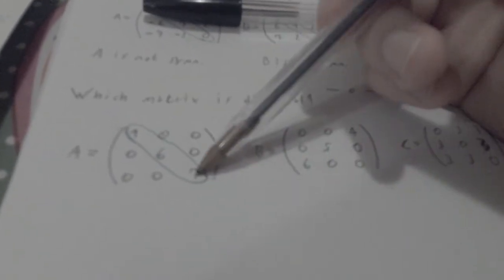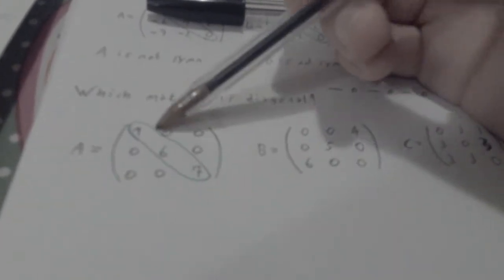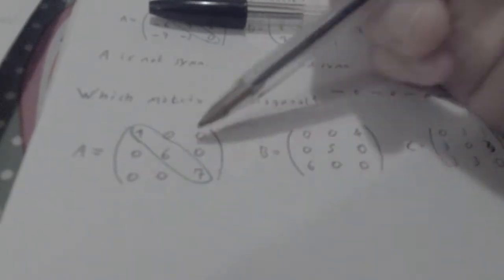Alright, so we basically have 1, 6, 7 in the main diagonal and a bunch of zeros everywhere else. So A is diagonal.